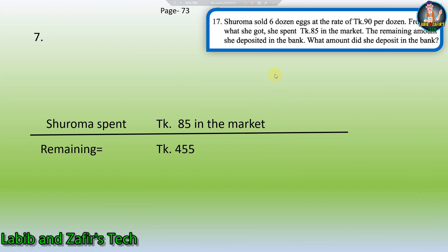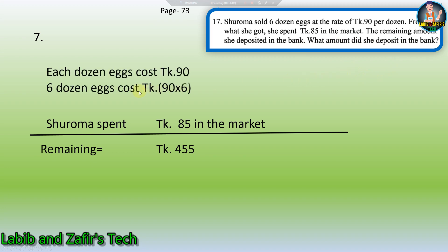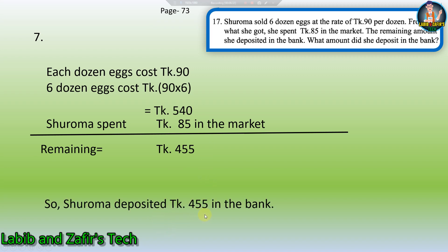Seventh word problem: Shuroma sold six dozen eggs at the rate of Taka 90 per dozen. From what she got, she spent Taka 85 in the market. The remaining amount she deposited in the bank. Each dozen costs Taka 90, so six dozen = 90 × 6 = Taka 540. She spent Taka 85, so 540 − 85 = Taka 455. Shuroma deposited Taka 455 in the bank.